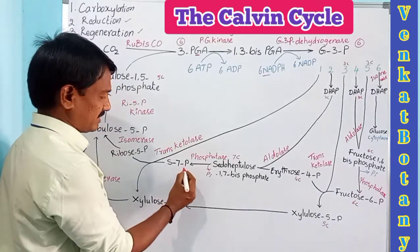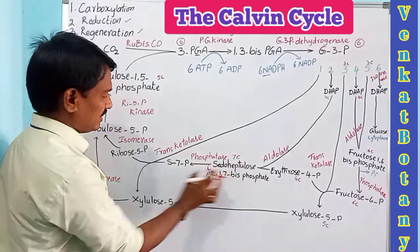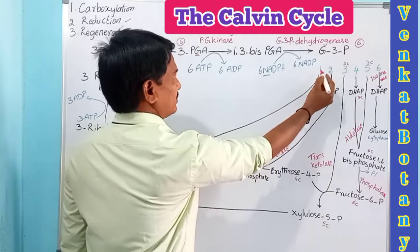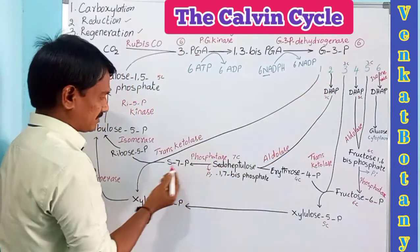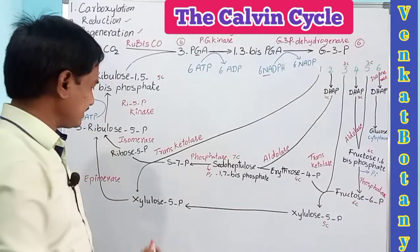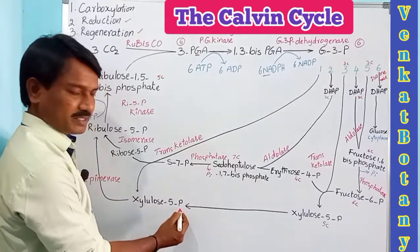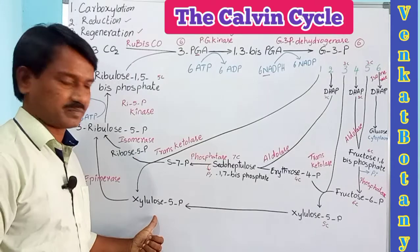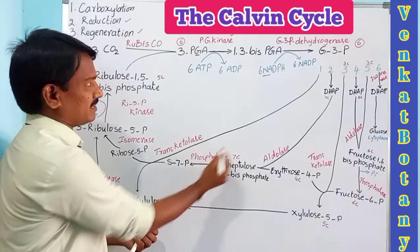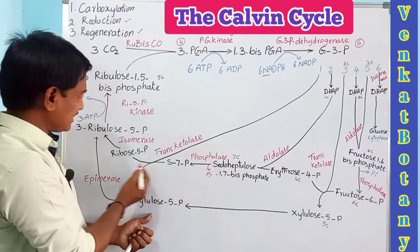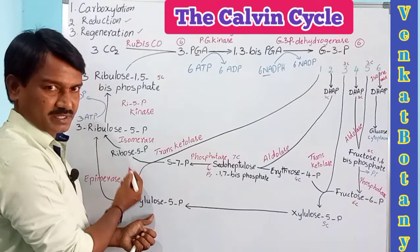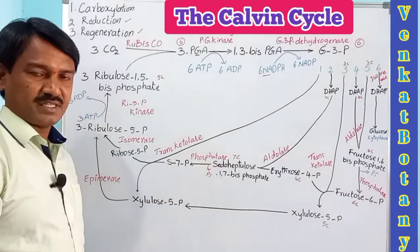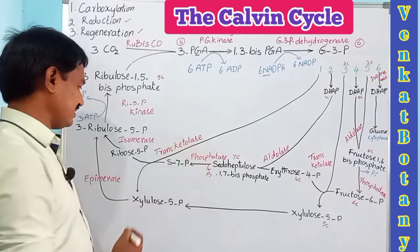Sedoheptulose 7-phosphate combines with one molecule of glyceraldehyde 3-phosphate to form one molecule of xylulose 5-phosphate and one molecule of ribose 5-phosphate. This reaction is catalyzed by the enzyme transketolase.